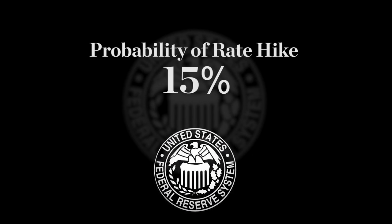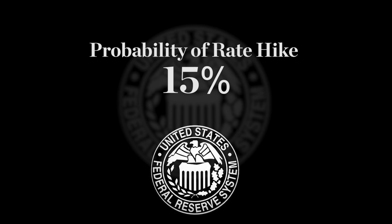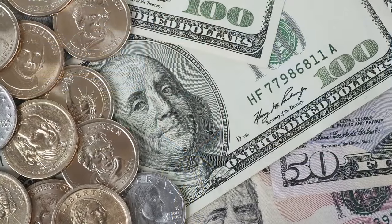US August retail sales were much weaker than expected. Pricing for a rate hike at next week's meeting is down to only about 15%, and even that might be a bit high. Instead, we will be mostly focused on the updated quarterly forecasts of the Fed members on GDP, inflation and interest rates. Those are likely to be quite soft and to undermine the US dollar.